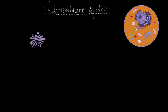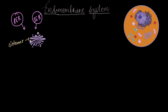The Golgi body lies just below the endoplasmic reticulum and receives whatever is packed in vesicles from both types of ER, processes it, and sends it out. The Golgi, just like the ER, is made up of multiple folds of membrane forming cisternae stacked parallel to each other. The cisterna towards the endoplasmic reticulum is called the cis face, and the cisterna towards the cell membrane is called the trans face. The cis face accepts vesicles coming from the ER, and the trans face is responsible for sending vesicles out from the Golgi body.